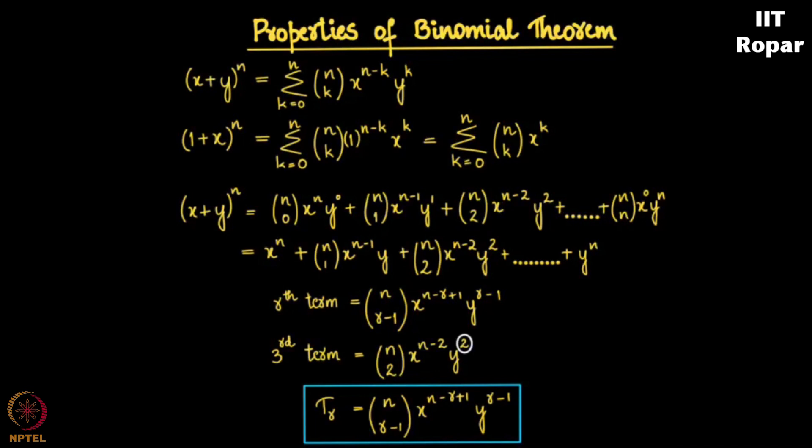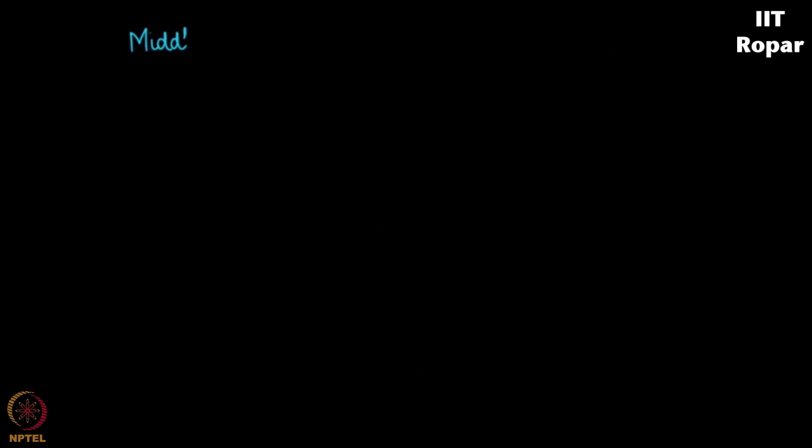The next property: In your expansion you might have several terms, but how do we find the middle term? Supposing n is very large like 15 or 20, you really cannot keep counting the terms one by one to find out the middle term. So let us use a nice formula here. Say n is even, then what?